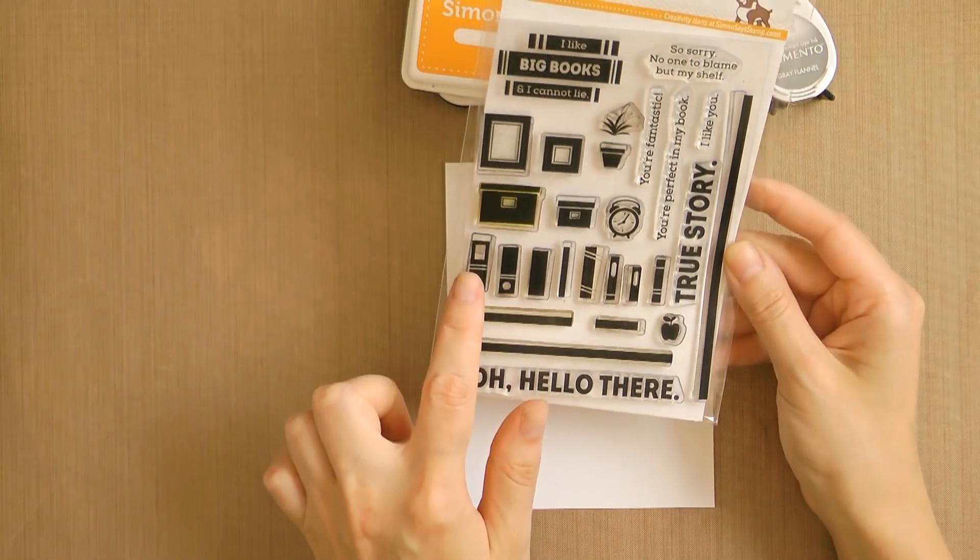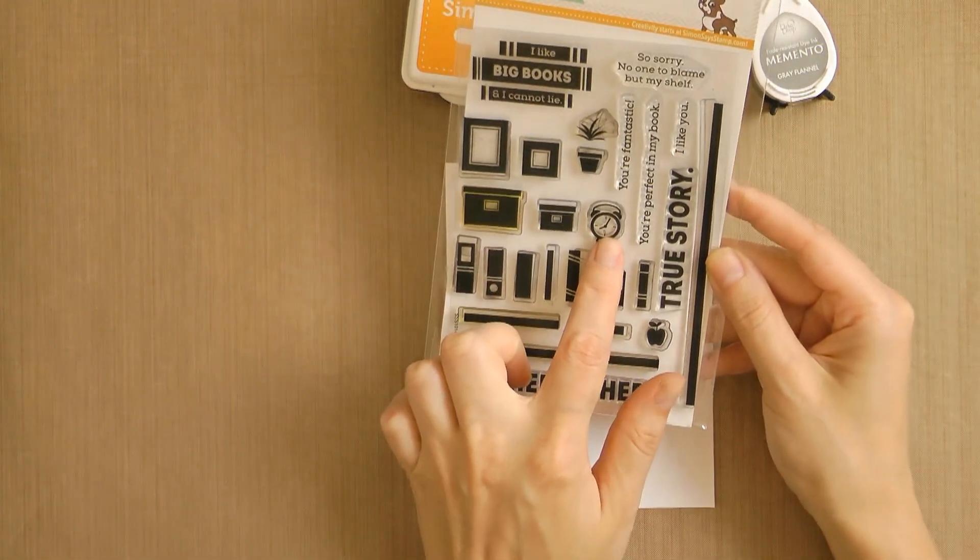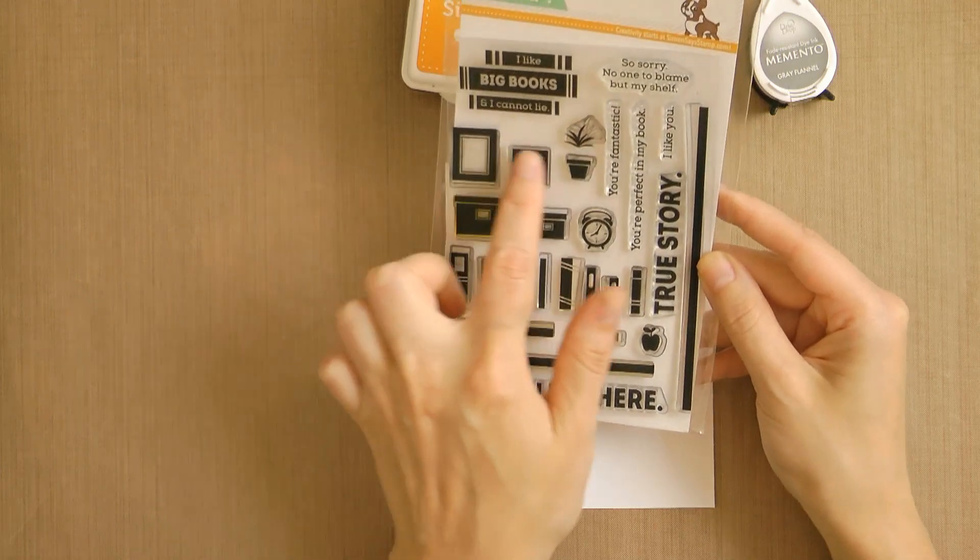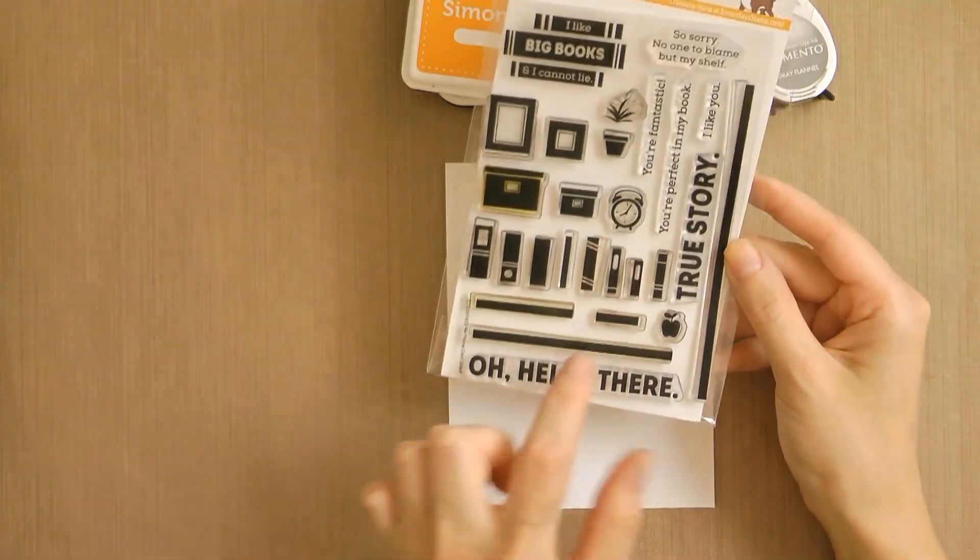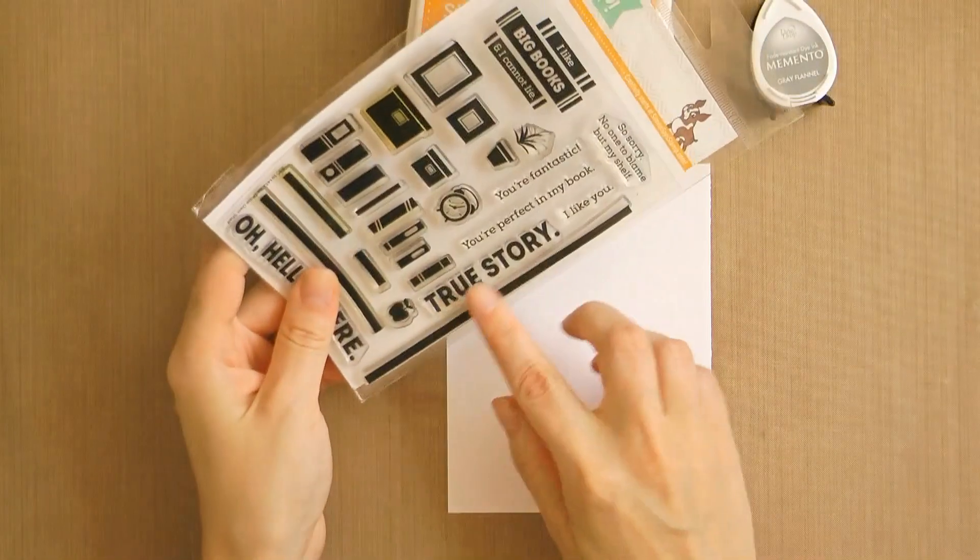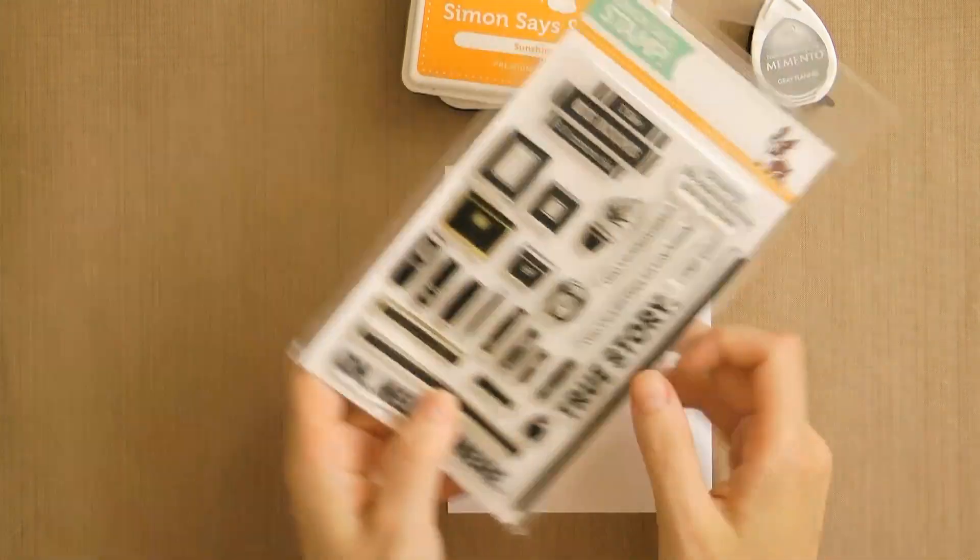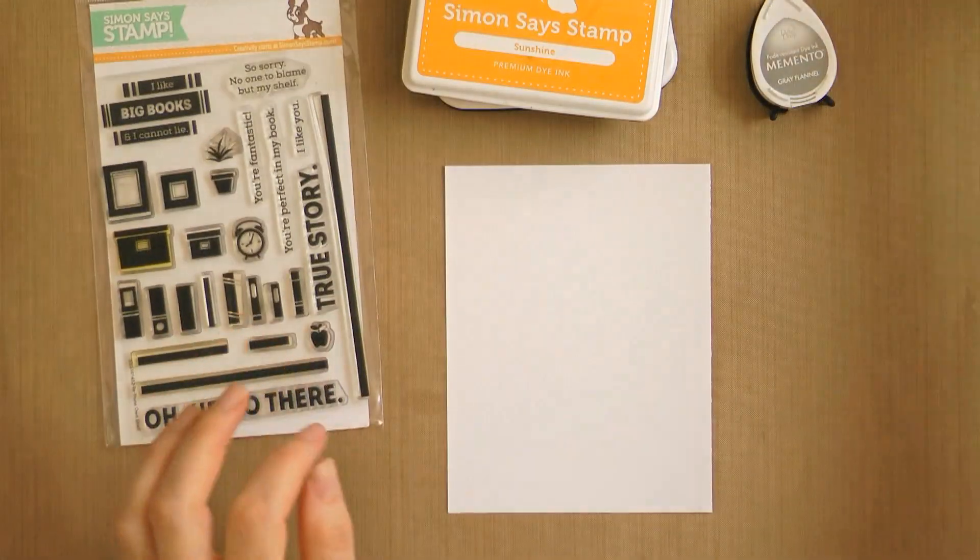You then have this awesome book sentiment, a great assortment of books - big, small, medium - and then some filler images too, like these boxes, alarm clock, little frames, an apple and a plant. And of course there are some great sentiments in here too.